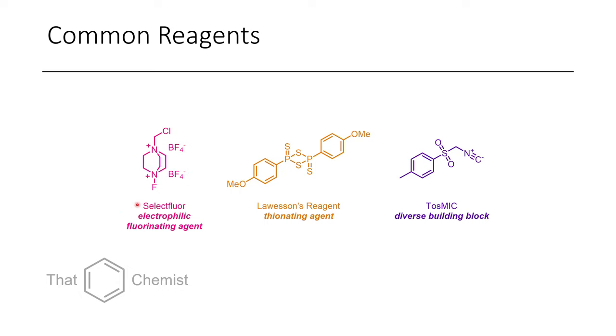The first one is selectfluor, and this is an electrophilic fluorinating agent. What I mean when I say electrophilic fluorinating agent, I mean it acts as if it's a source of F+, which means that it can add fluorine to certain nucleophiles. This reagent is actually quite common in organic synthesis, and I've actually met Bob Silvret, the guy who helped develop it.